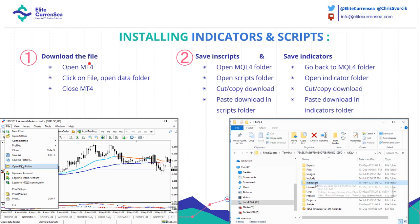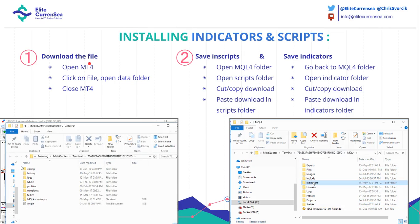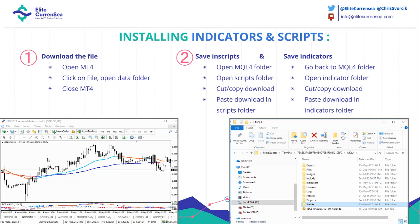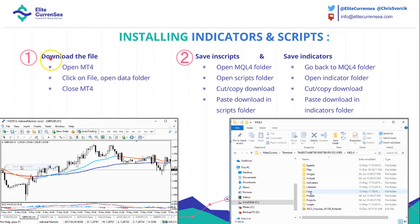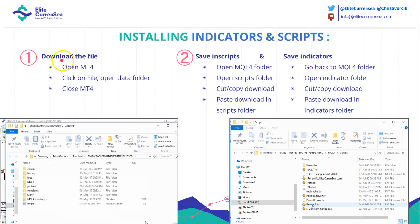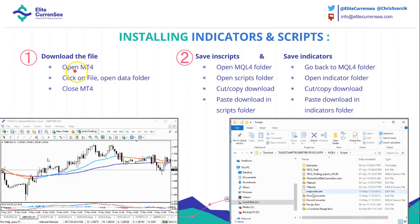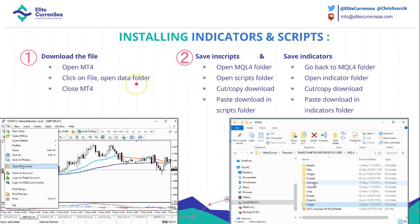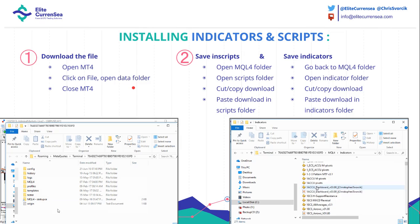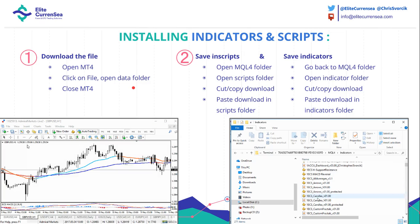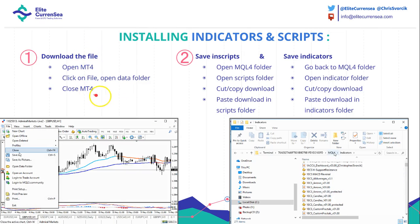Step one: download the file. Step two: open MT4. Step three: click on File, then Open Data Folder. Step four: close MT4. So this is the sequence of things you want to do — first download the file, then open MT4 and click on File, Open Data Folder. The data folder gives you the ability to save the file you just downloaded. Then you want to close it. These are the first four steps.